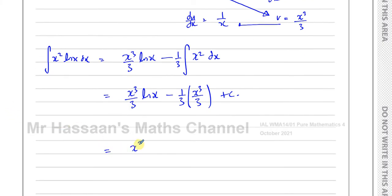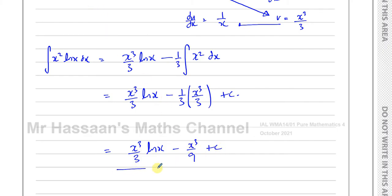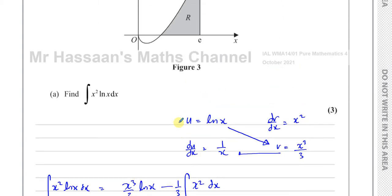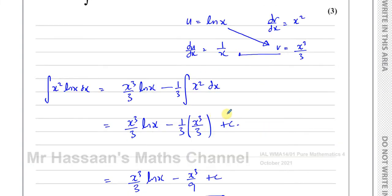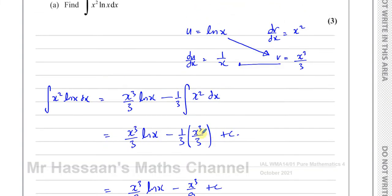Now I've got my answer — just simplify it. I have x cubed over 3 times ln x minus x cubed over 9 plus c. And there's the answer to part A of the question — simple integration by parts.